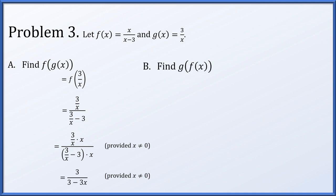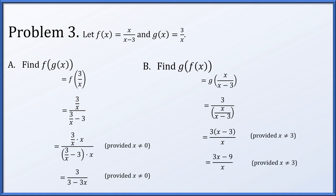For g of f of x, we take f of x, which is x over x minus 3, and compute g of that — 3 over it. Provided x is not equal to 3, we reciprocate and multiply to get 3x minus 9 over x. Since 3 is not in the domain of f to begin with, it cannot be in the domain of g of f either.